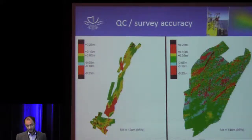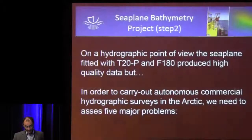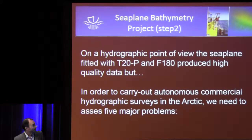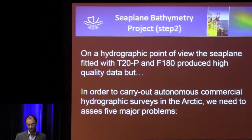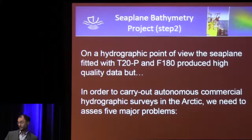In relative terms, the seaplane system is good, as shown in the QC results. But in absolute terms, we have an offset of about two meters because the F180 IMU was operated in standard mode without post-processing. This is easy to improve. On a hydrographic point of view, the seaplane fitted with a T20P and F180 produces high-quality data. However, to carry out autonomous commercial hydrographic surveys in the Arctic, we need to address five major problems, which Olivier will now cover for step two.